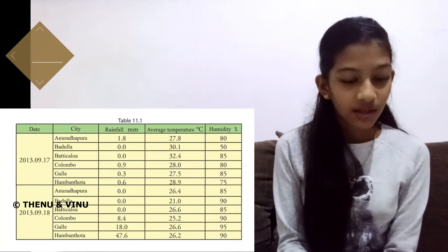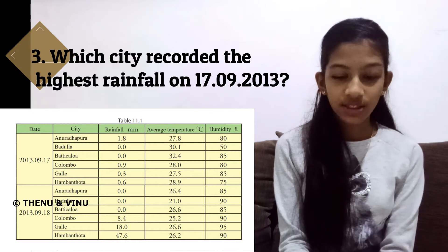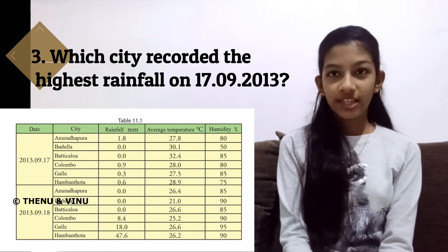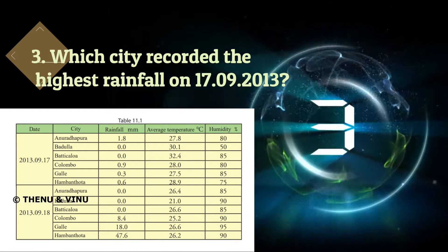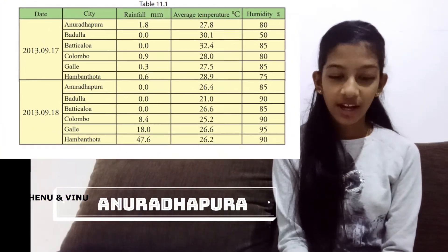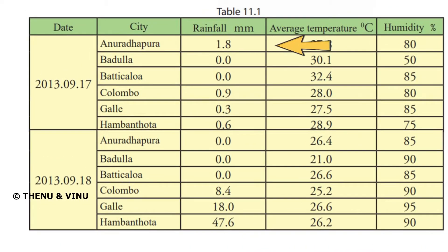The next question is: which city recorded the highest rainfall on 17-9-2013? Using this table you should answer this question within five seconds. The answer is Anuradhapura. You can see in the rainfall column that on 2013-9-17, Anuradhapura has the highest rainfall for that day.